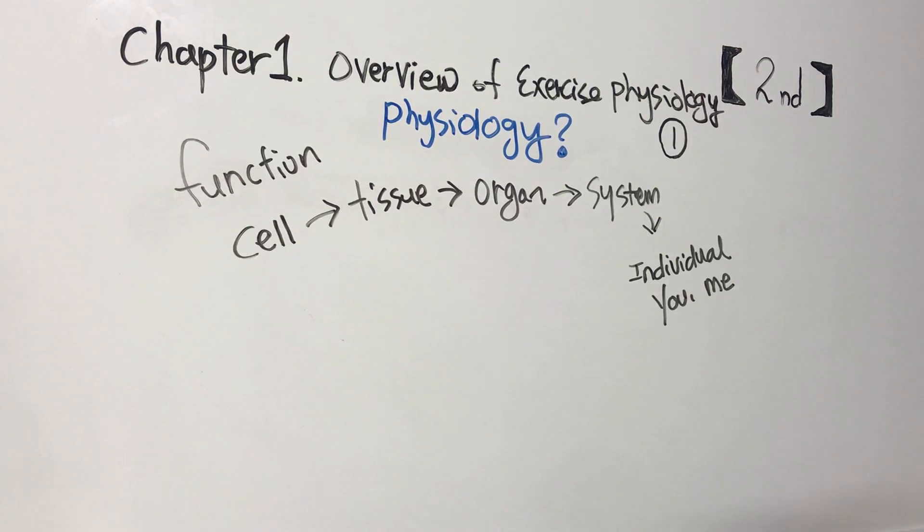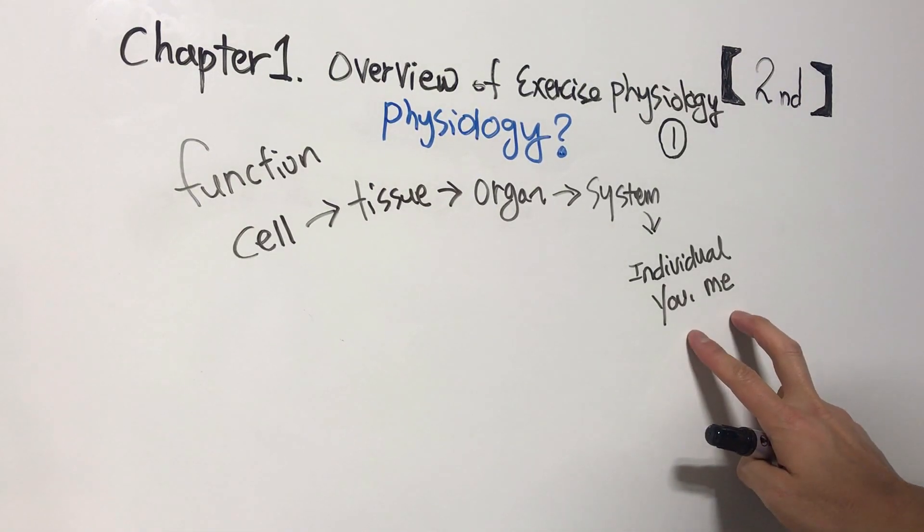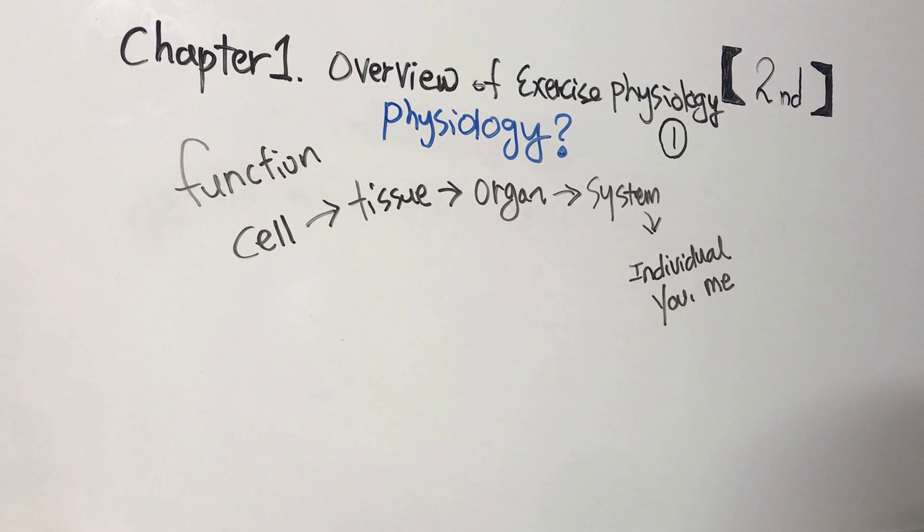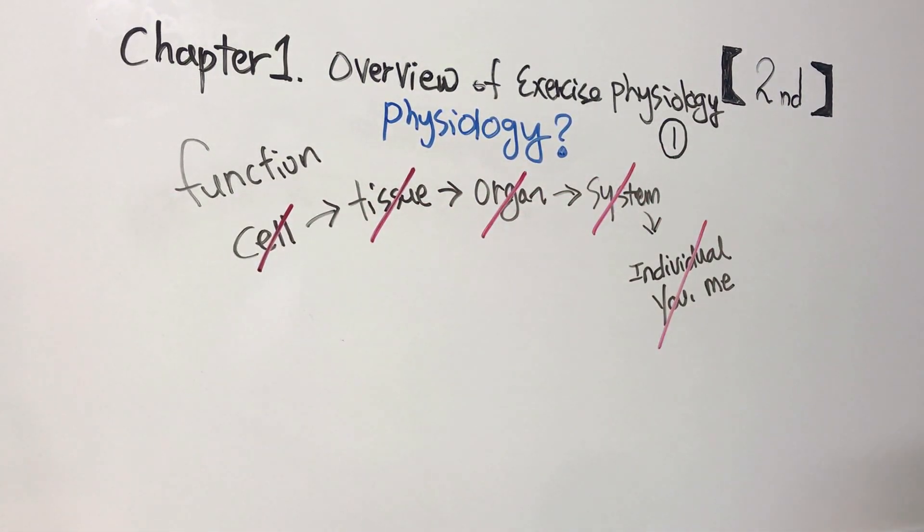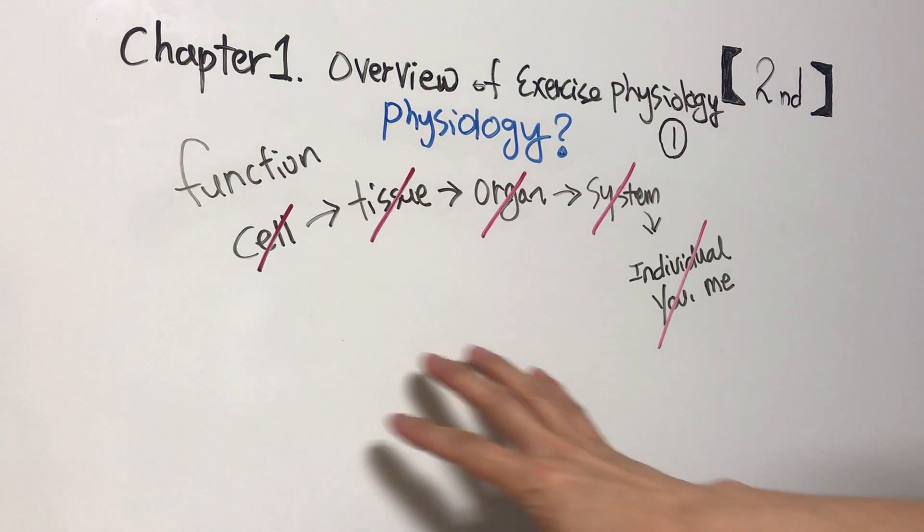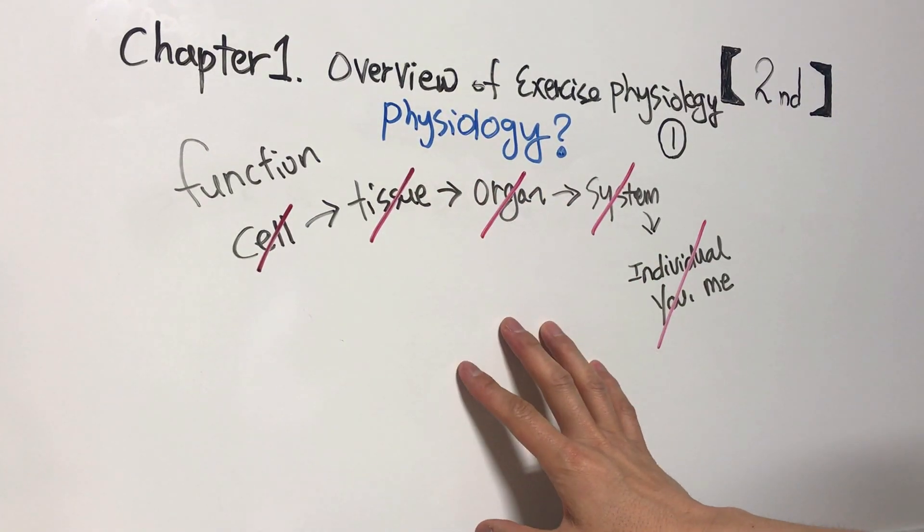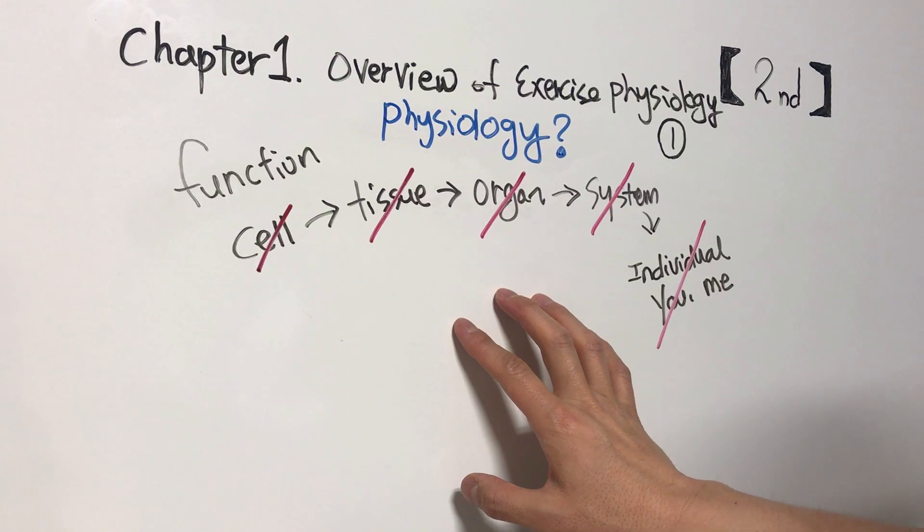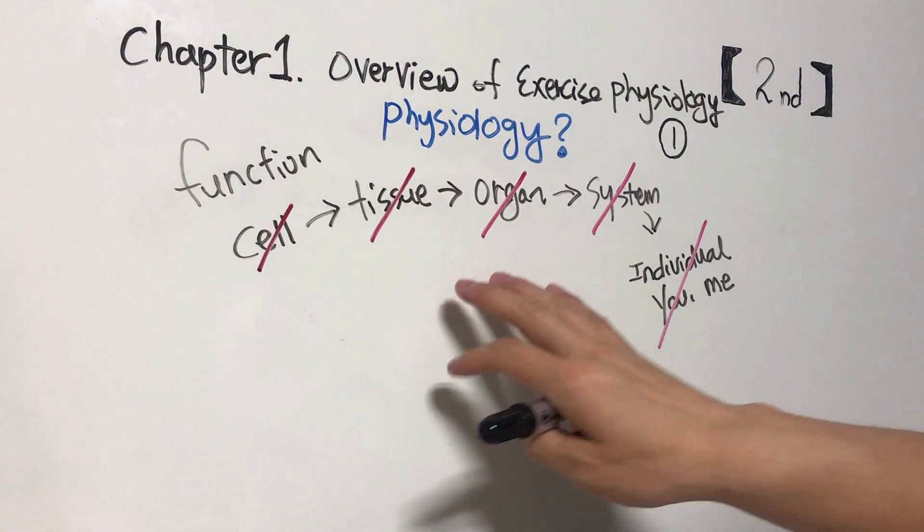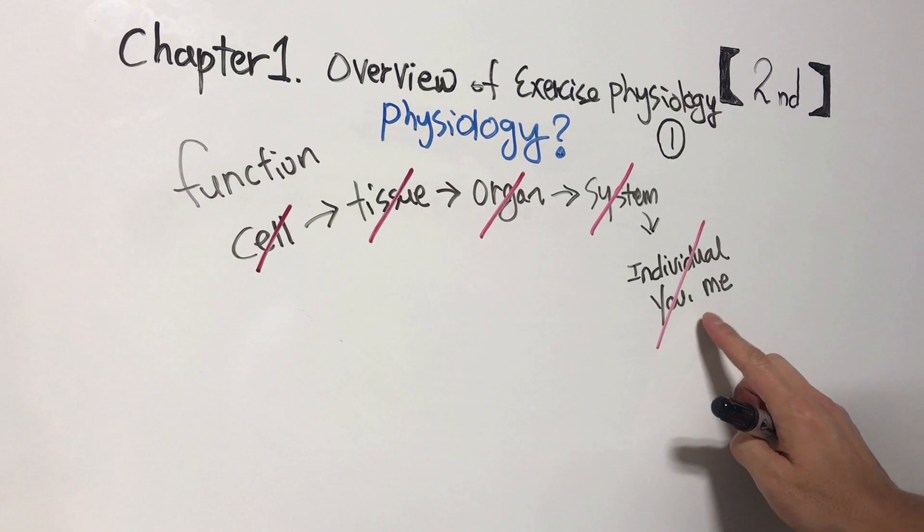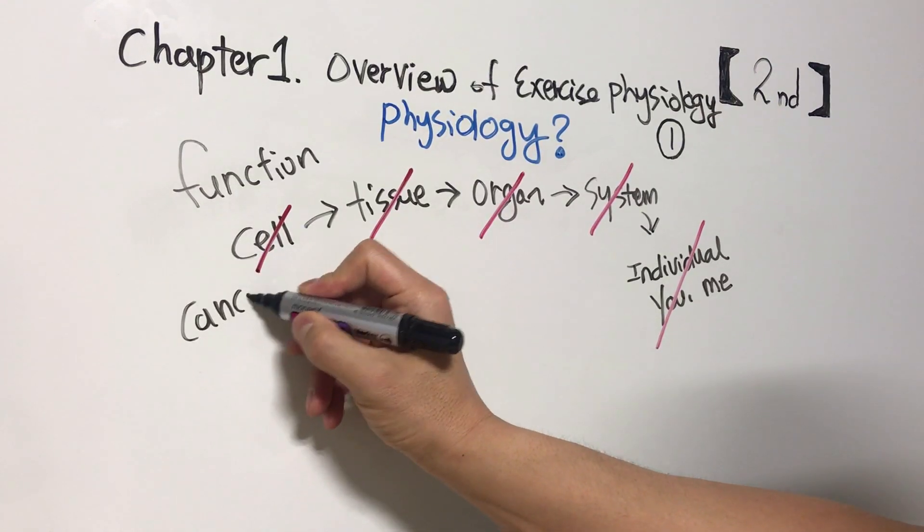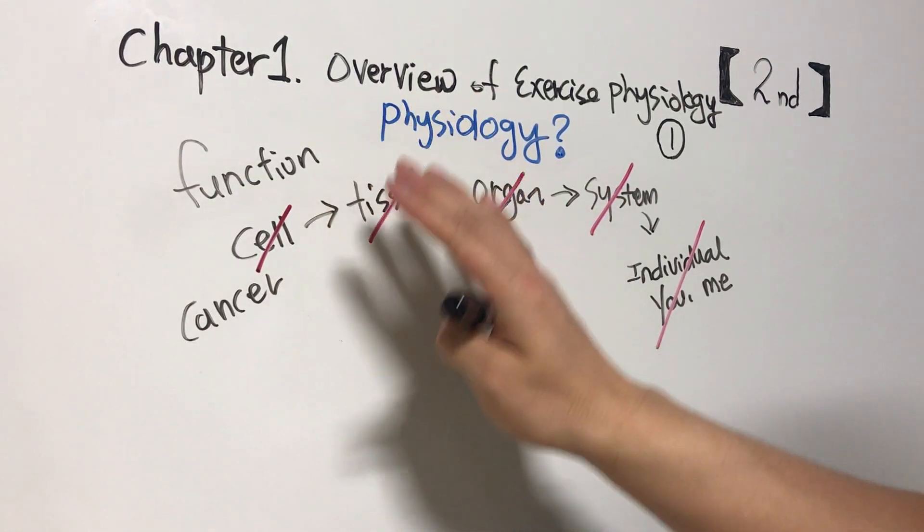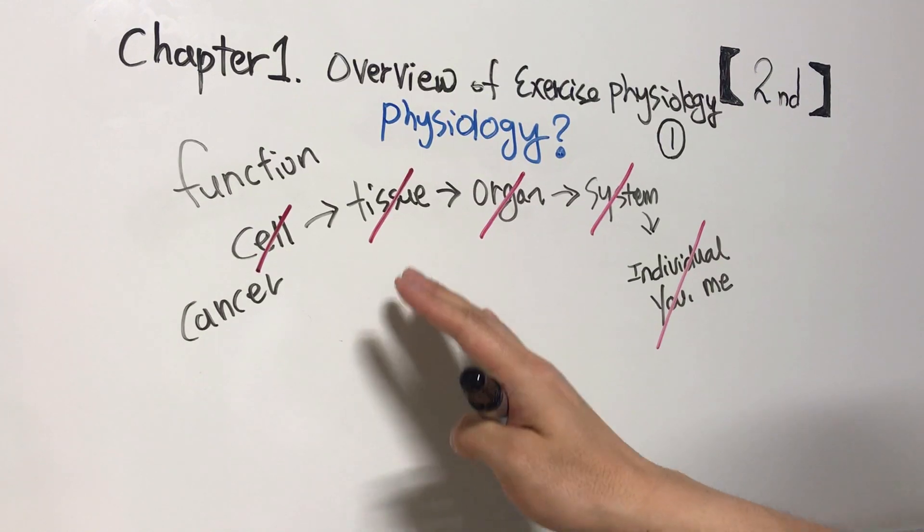So it means if your cells die, die, die, die - I write it this way because my English is not enough, right? Eventually, the individual will be unable to function. For example, when cancer cells develop, eventually die.